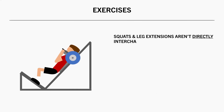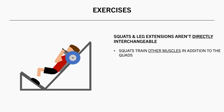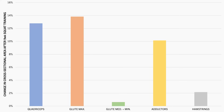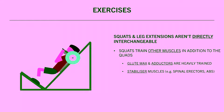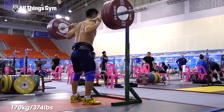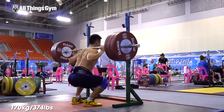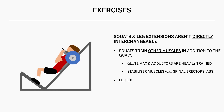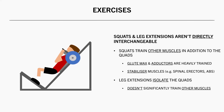Both exercise categories train the quadriceps well but aren't completely interchangeable. Squats train other muscles in addition to the quads — namely the glute max and adductors heavily contribute too, as seen in a study finding significant increases in glute max and adductor cross-sectional area after squat training. Depending on the squat variant, stabilizer muscles of the torso also get indirect work — for example, during a barbell back squat, the spinal erectors, abdominals, and upper traps work isometrically. Whereas leg extensions pretty much just isolate the quads with no significant contribution from other muscles.